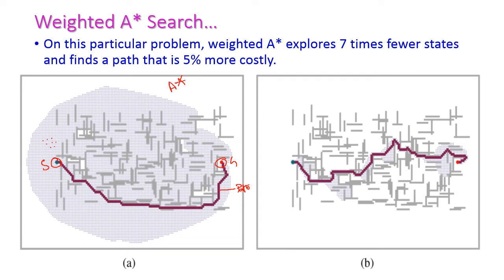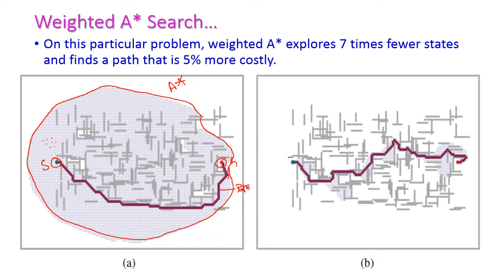When it comes to A* search, it has to explore more number of states to find the goal — it explored almost all the states. In contrast, with weighted A* search, it explores a very minimum number of states to reach the goal. It reduces to 7 times fewer states to find the path, and it is 5% more costly when compared to A* search, because we add weight to the heuristic value.